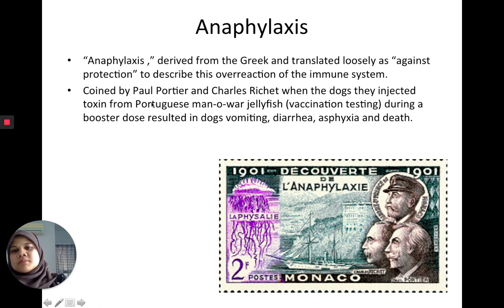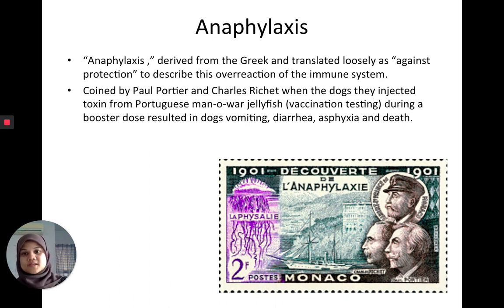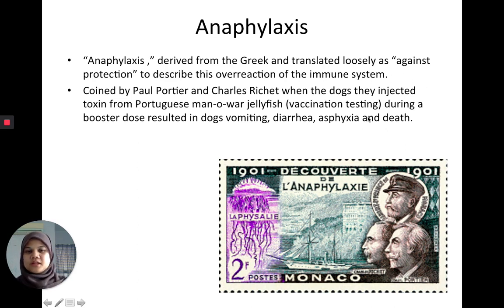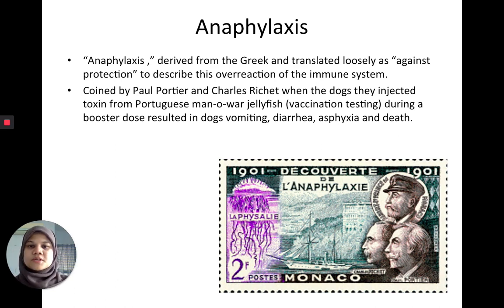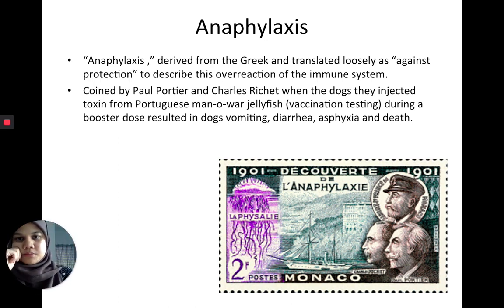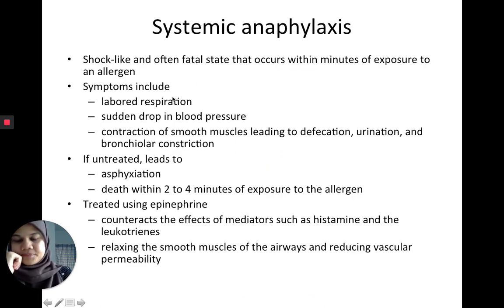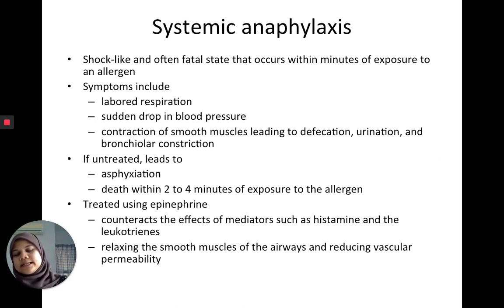Anaphylaxis was termed by Paul Portier and Charles Richet when they observed that dogs they were testing with toxins from a jellyfish — attempting to make a vaccine — actually died from the booster dose. In that case, rather than the secondary response giving a more protective effect, the second dose caused severe anaphylaxis and killed the dog. This illustrates how the immune memory, normally beneficial, can be catastrophically harmful.